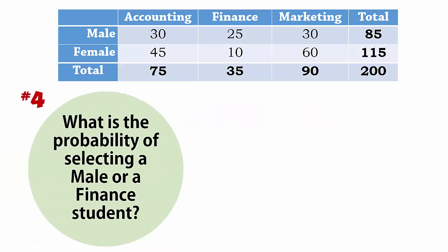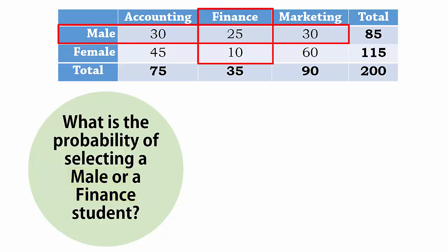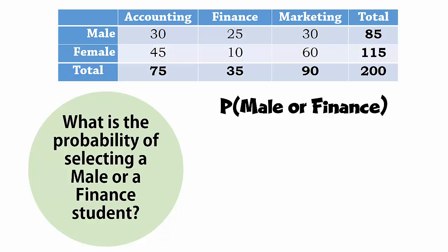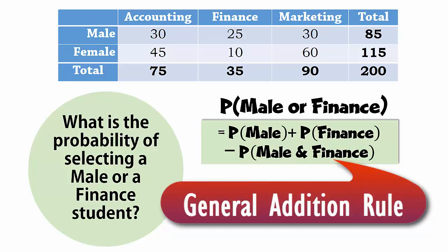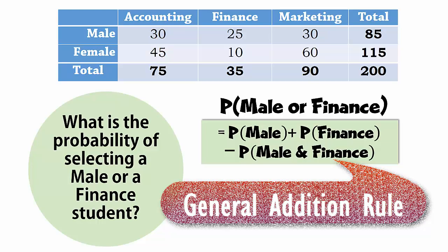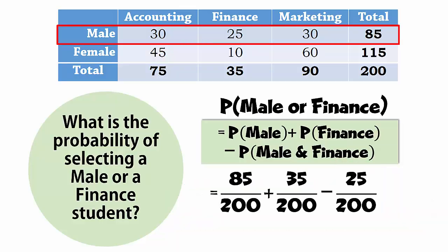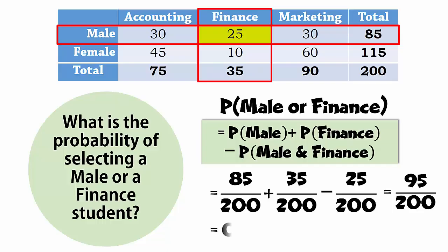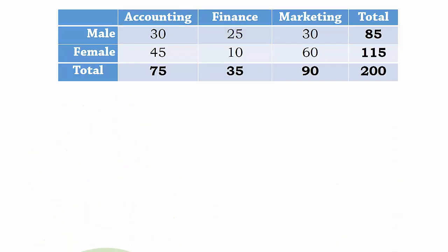Number 4: What is the probability of selecting a male or a finance student? We can answer this by adding up all the values in cells relating to males and to finance and dividing by 200. We can also apply the addition rule: probability of male or finance equals probability of male plus probability of finance minus probability of male and finance, which gives 85 over 200 plus 35 over 200 minus 25 over 200. That equals 95 over 200 or 0.475.